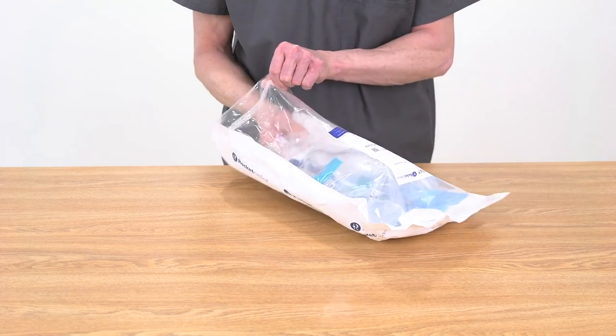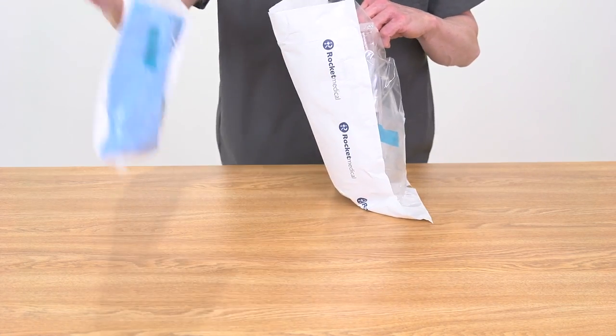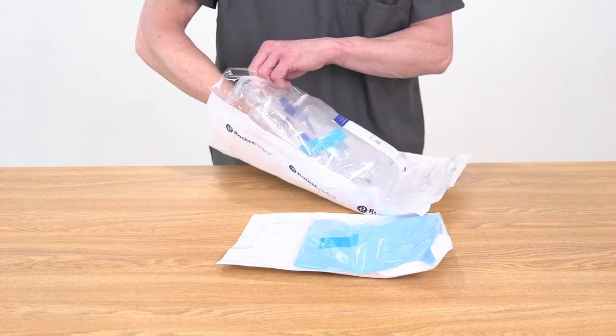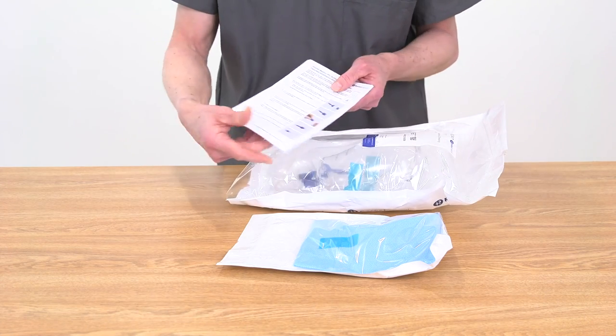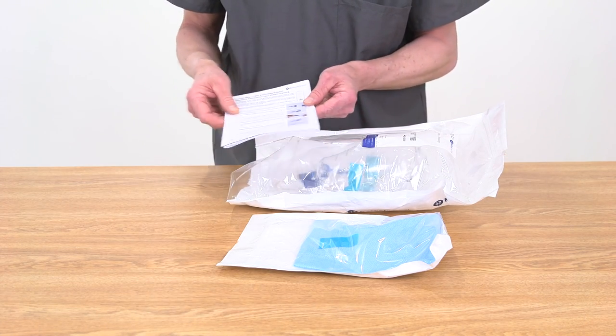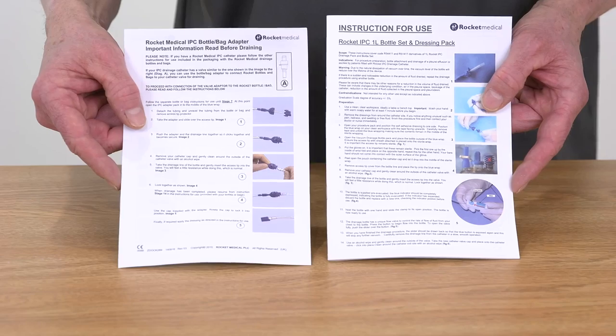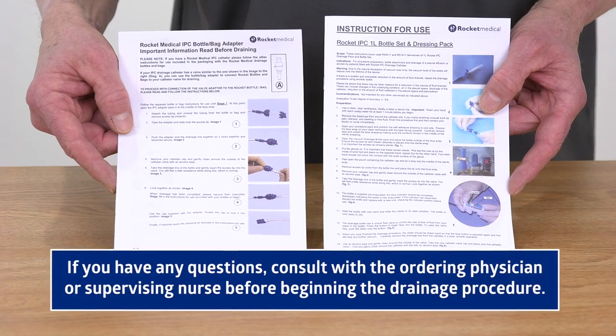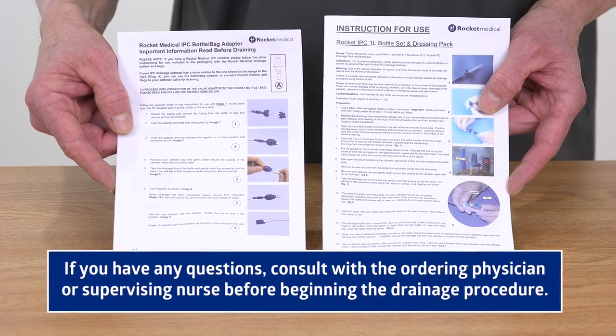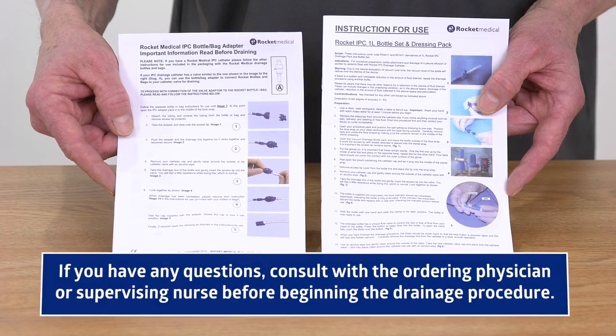Make sure you have a clean, clear workspace, ideally a table or benchtop. Open the ROCKET IPC Drainage Kit Sterile Package. Remove the procedure pack from the kit and place it on your clean workspace. Leave the bottle in the bag. Take this time to review the instructions included in the kit. If you have any questions, consult with the ordering physician or supervising nurse before beginning the drainage procedure.